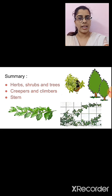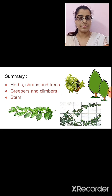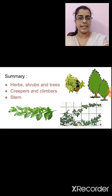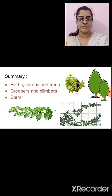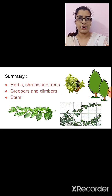What are herbs? Herbs are plants that are short in size. The stem of such plants is tender and green in color. Branches may or may not be seen in herbs. Examples of herbs are coriander plant, mint plant, tomato plant, etc.